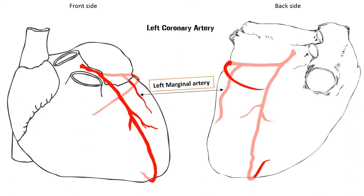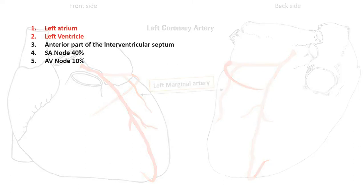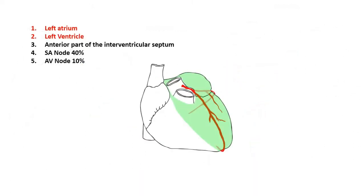Another artery that arises from the circumflex artery and runs along the left margin of the heart is called the left marginal artery. The left coronary artery mainly supplies the left side of the heart — the left atrium, left ventricle, anterior part of the interventricular septum, the SA node for 40% of cases, and the AV node for 10% of cases. That was all about the left coronary artery — just the principal branches of the coronary arteries.